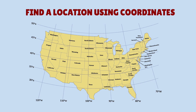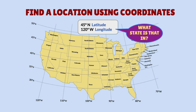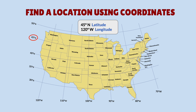Now let's take a look at this map of the United States with the coordinate grid. You can use coordinates to find any location. For example, let's take the coordinates 45 degrees north and 120 degrees west. Where is that location, and what state is that in? If we find 45 degrees north and 120 degrees west, we can follow those lines until they intersect — and there's the location in the state of Oregon.